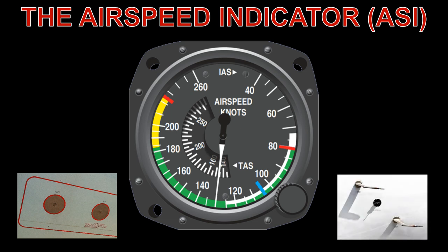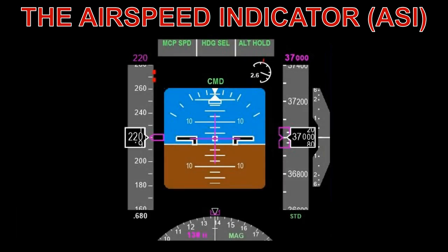This difference in pressure is registered with the ASI pointer on the face of the instrument. Modern airliners have advanced computers and displays to present airspeed, so in this video we will just look at indicators you may see in a light aircraft. This will give the basics of how it works.